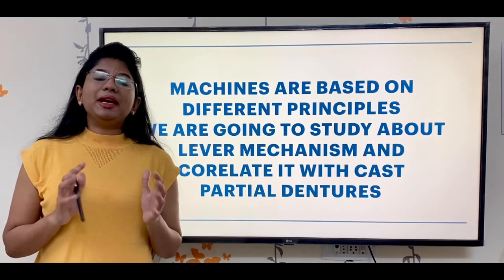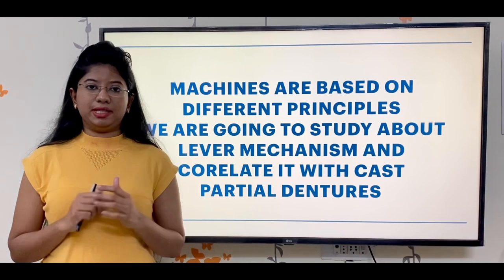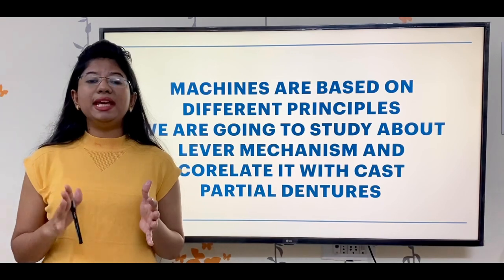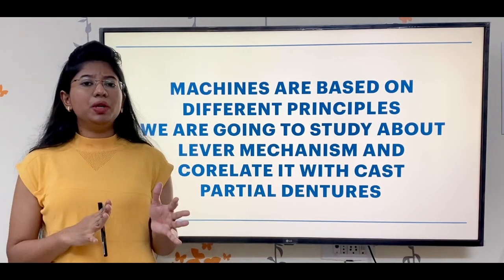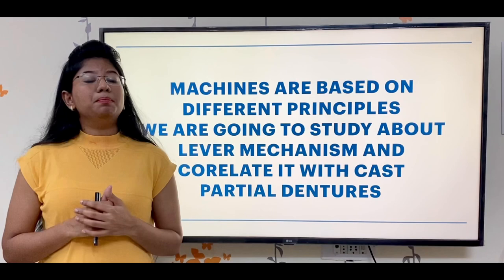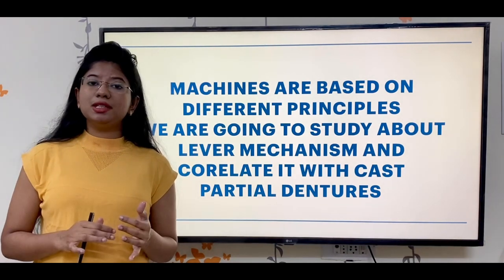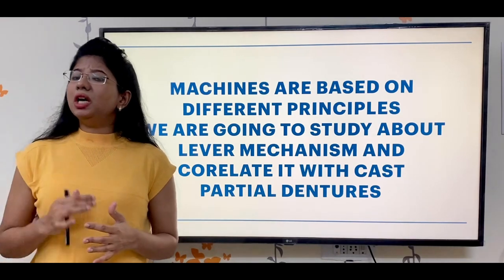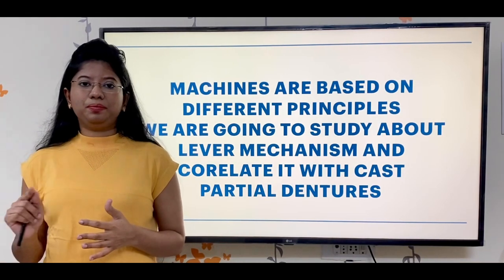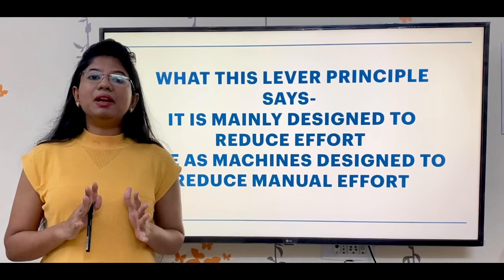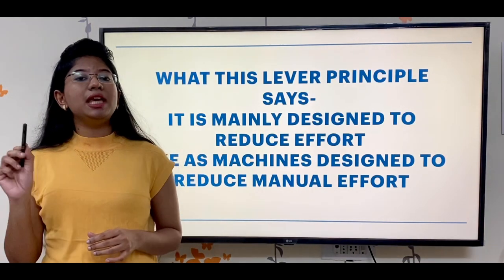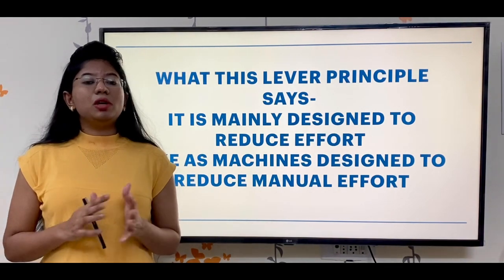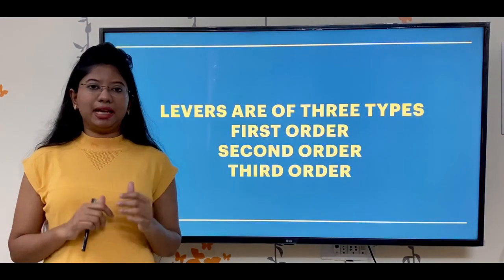Biomechanics deals with the principle of machines. There are different kinds of machines like lever, wheel, axle, screw, wedge, and many more. The machines were devised to reduce the effort. So we are going to learn first about the lever principle. The concept of lever principle is mainly to reduce the effort and gain a mechanical advantage.